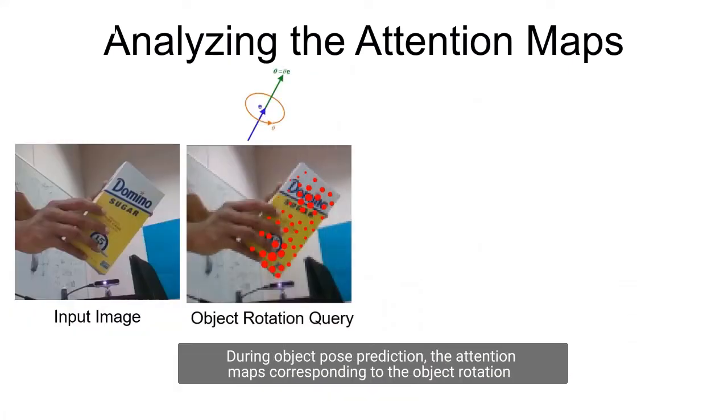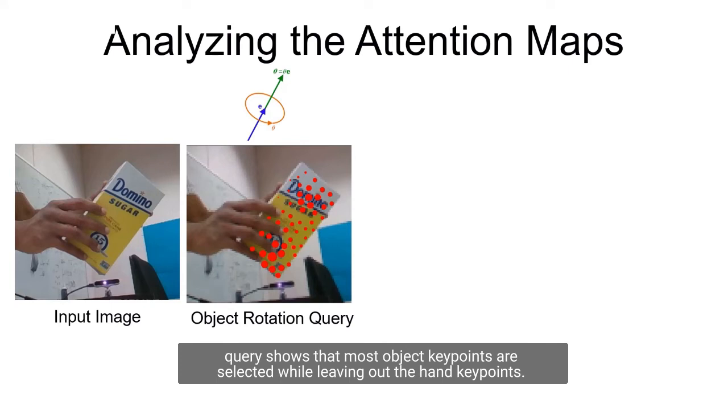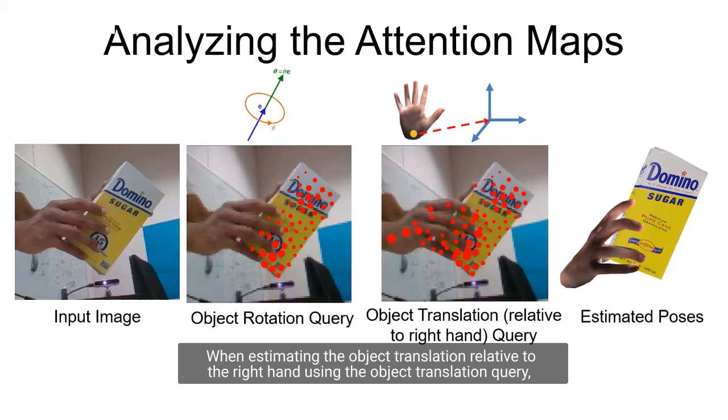During object pose prediction, the attention maps corresponding to the object rotation query show that most object keypoints are selected while leaving out the hand keypoints. When estimating the object translation relative to the right hand using the object translation query, both the hand and object keypoints are selected as they are both relevant.